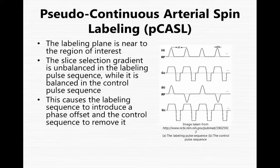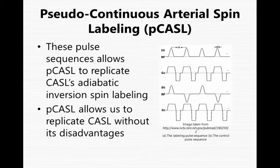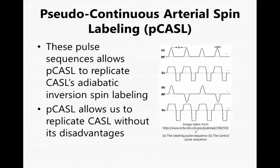Therefore, a phase offset is introduced by the labeling sequence, and the control sequence later removes it. The pulses are actually very close to each other and are applied in large quantities. CASL uses a spin labeling method called adiabatic inversion, and PCASL aims to replicate this method. These pulse sequences allow PCASL to do so without having the disadvantages of CASL.